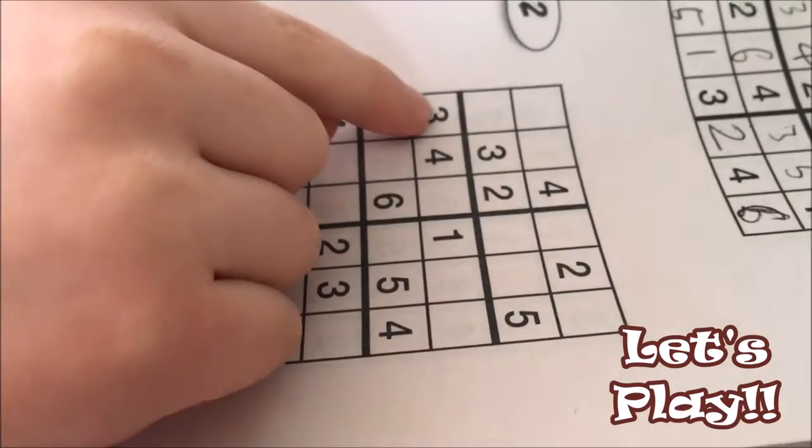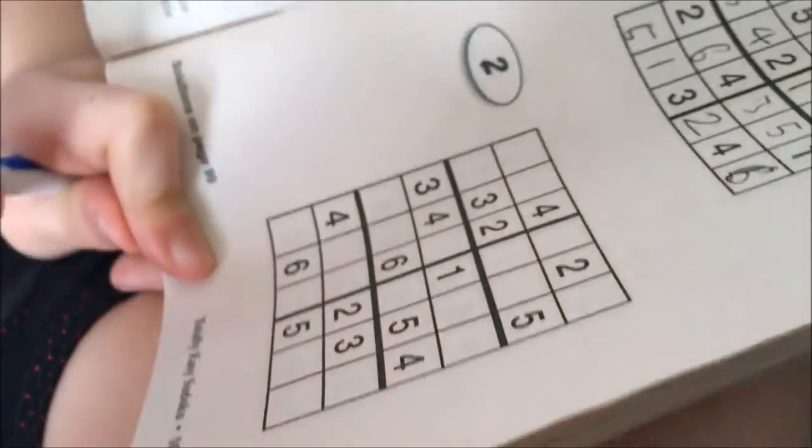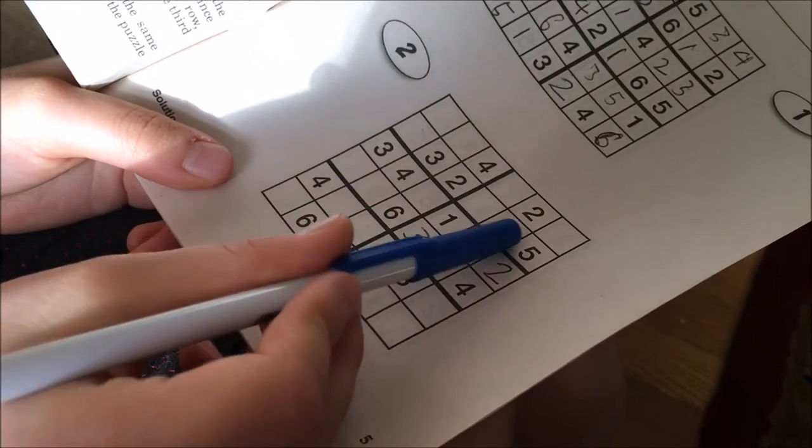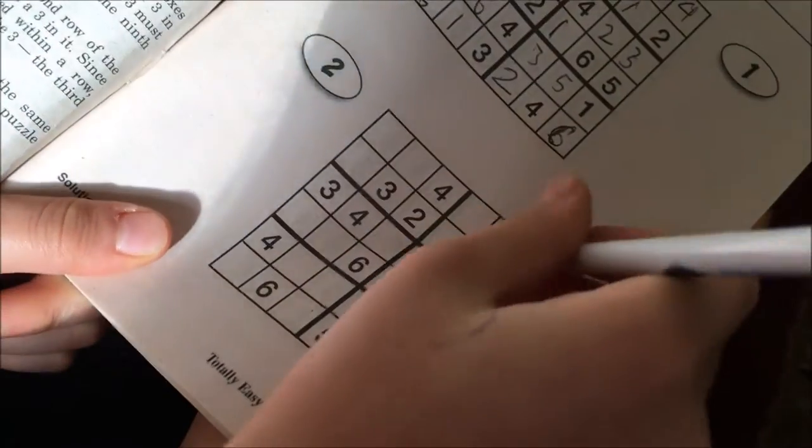You cannot put a three anywhere here because there's already three right here. So what you have to do is you have to put a three right here, and you cannot go here or here, so it's got to go right here.